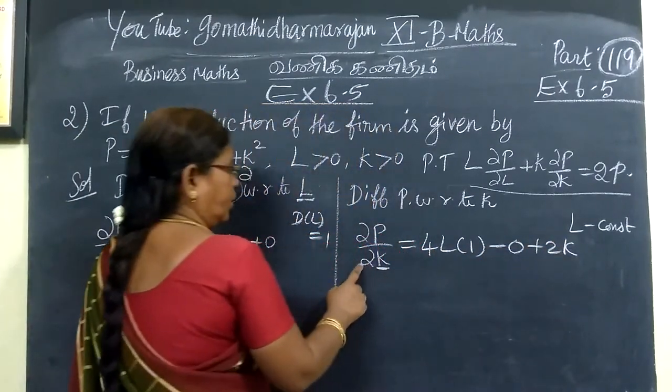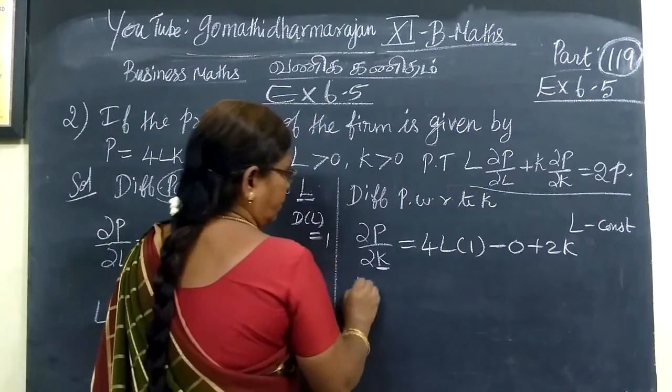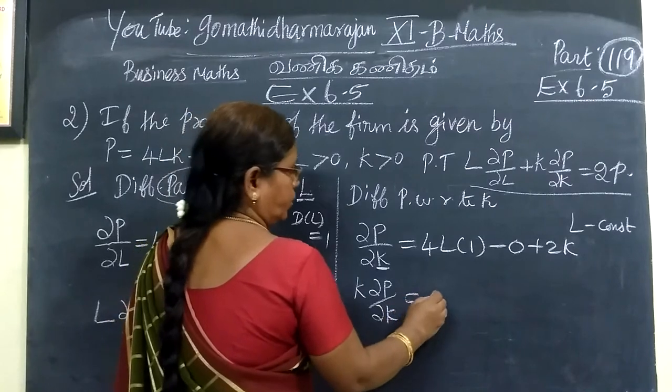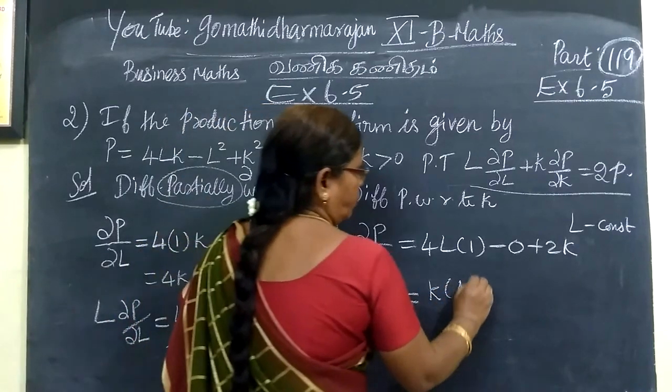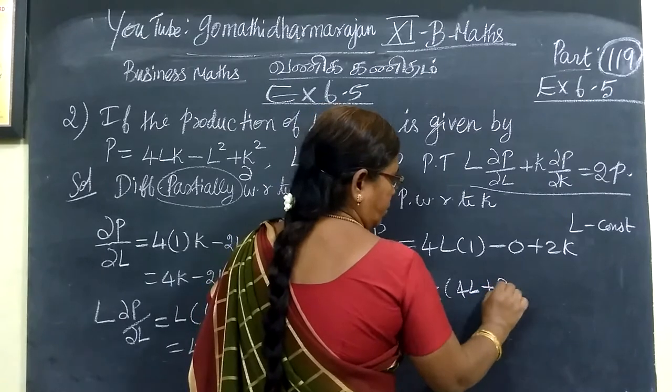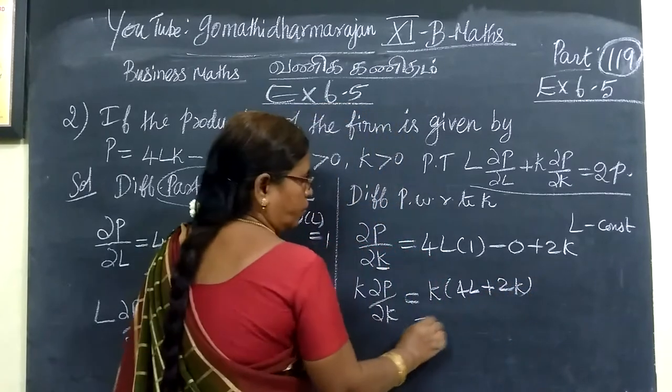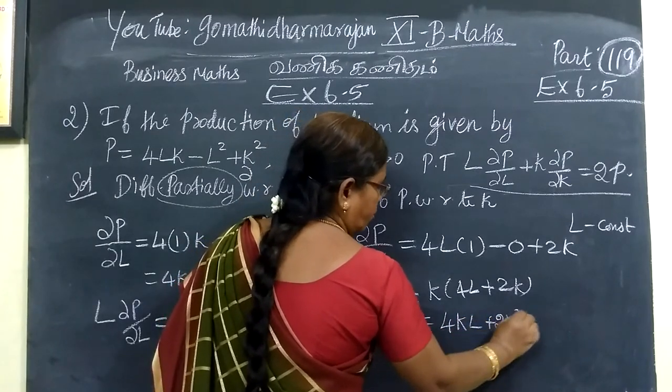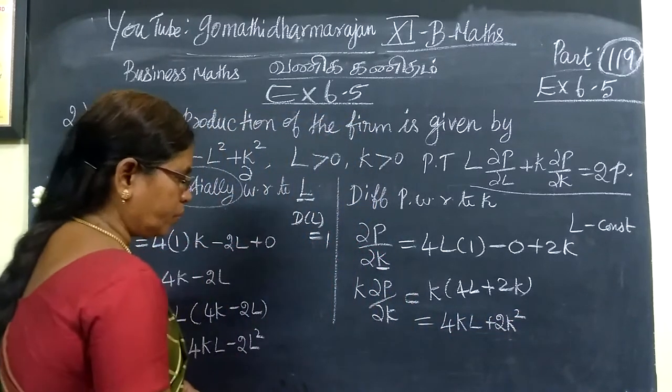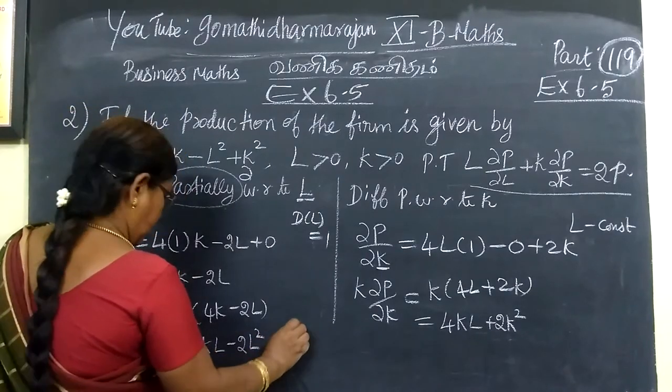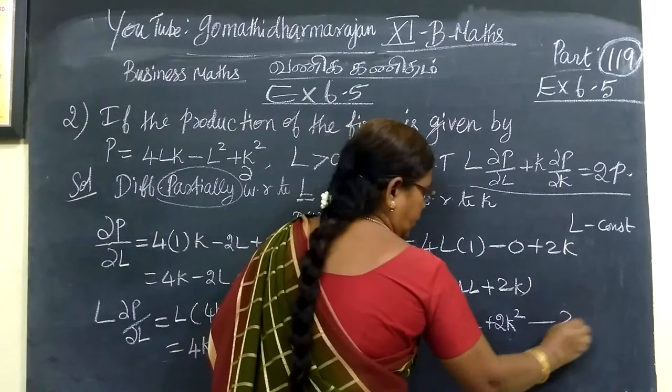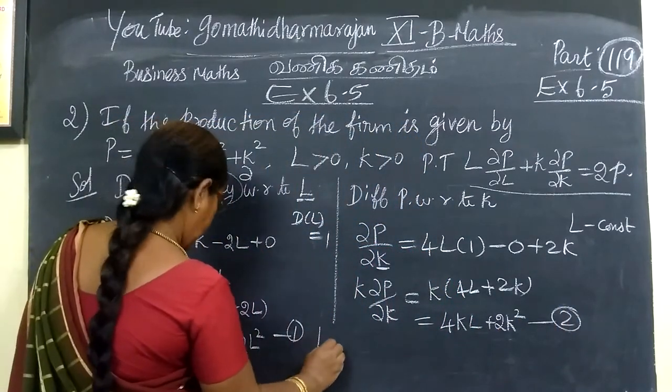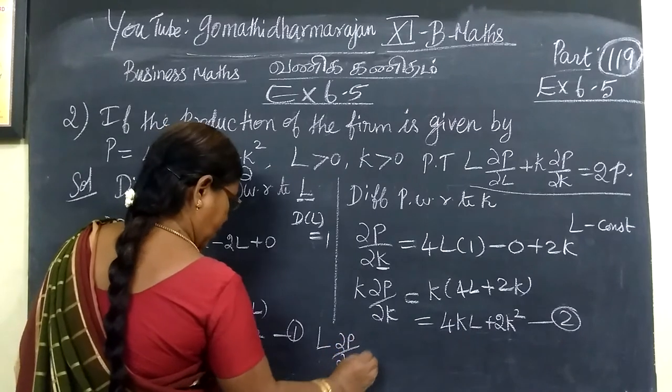Next, K into ∂P by ∂K equals K times 4L plus 2K, which equals 4KL plus 2K square.